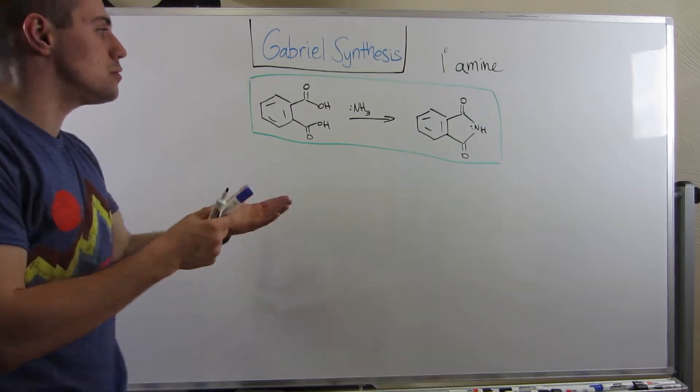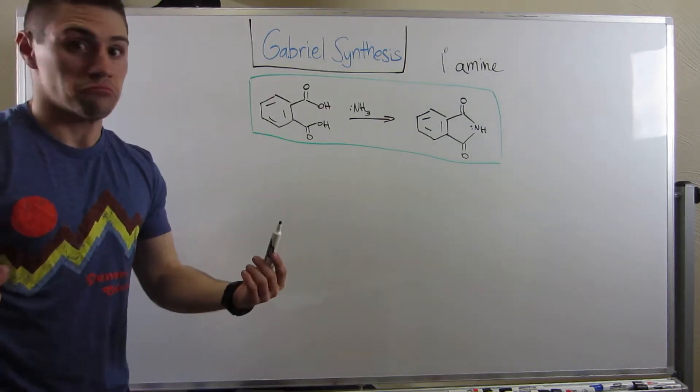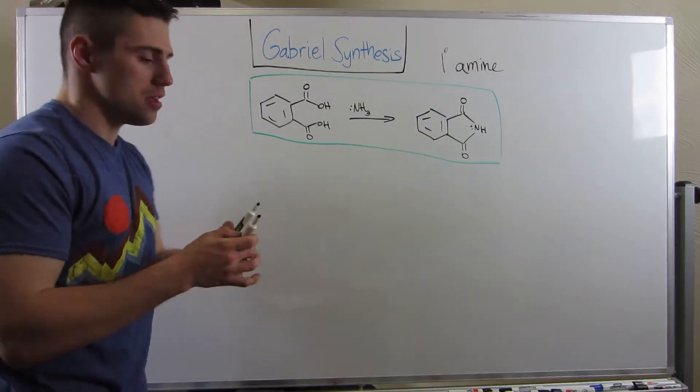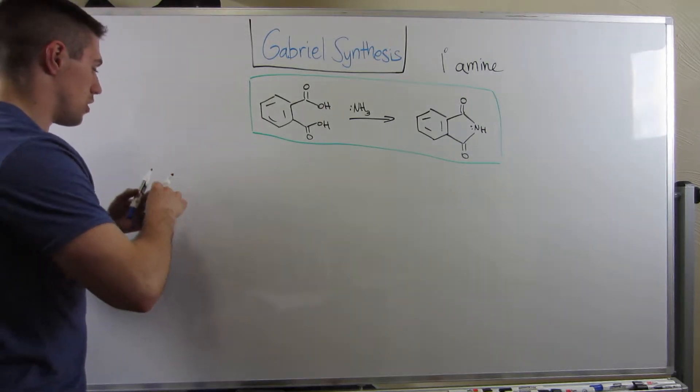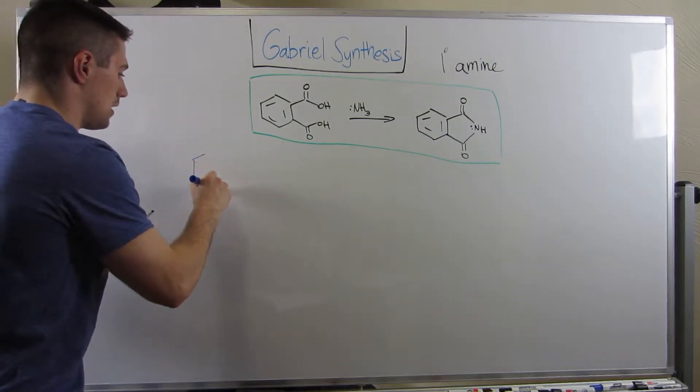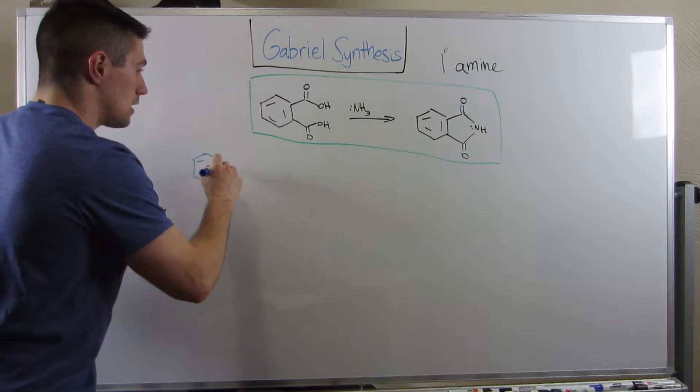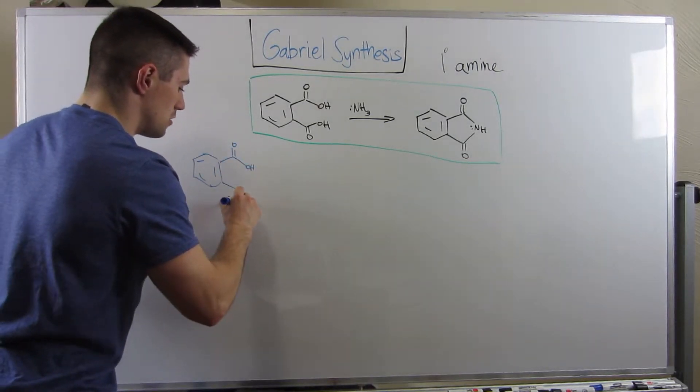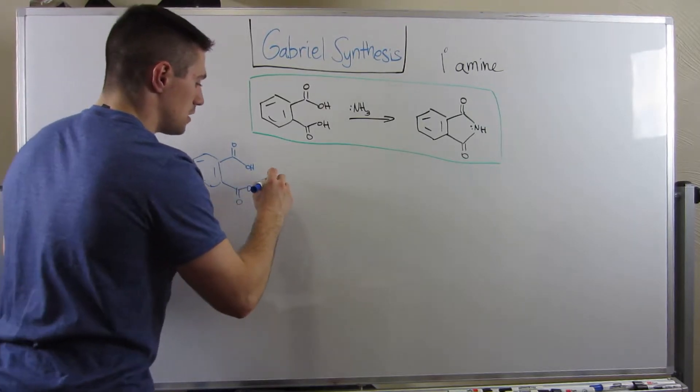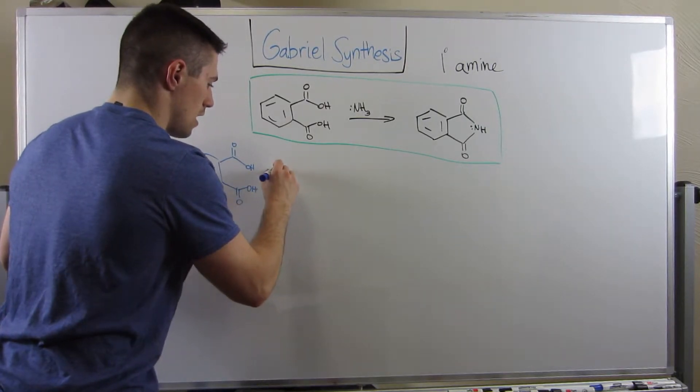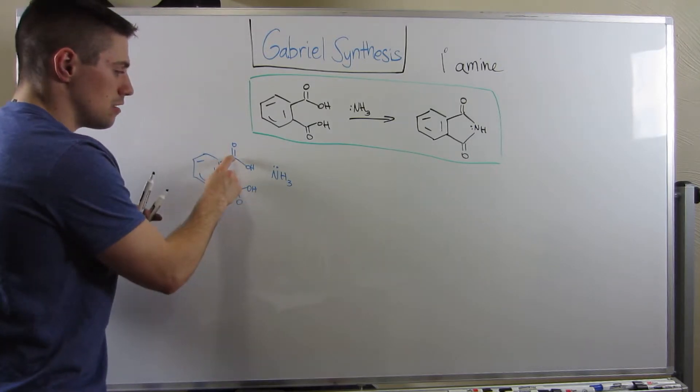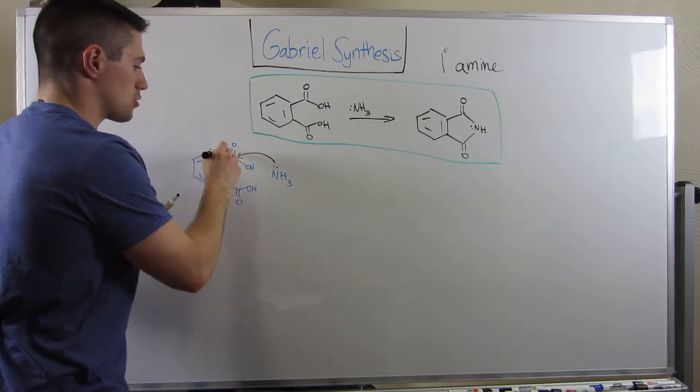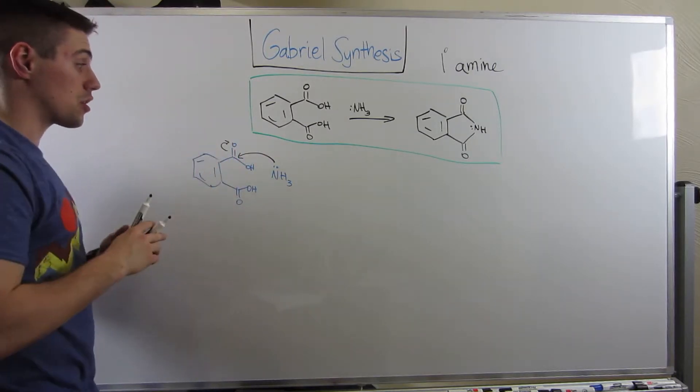But the thing is, you guys already know how to do this. We already know how to make amides. That's all we're doing, just twice. This is nothing new. So let's just jump right in. So I'm going to draw my ring. And the first thing I'm going to do is I'm going to take my NH3, and I'm going to just attack just the top carbonyl, because why not? It doesn't matter which one I attack. It's symmetrical.